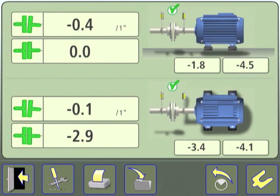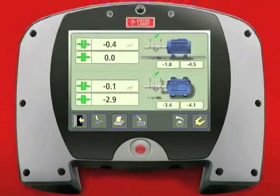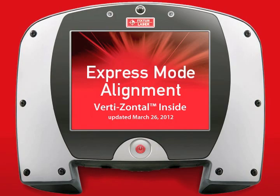The results screen is automatically presented displaying a successful vertizontal compound move alignment. As presented in this touch tip, the Vibraline vertizontal compound move alignment can often be completed in just one set of moves.